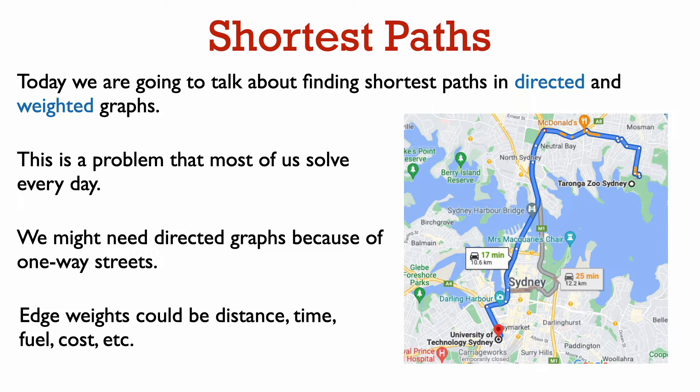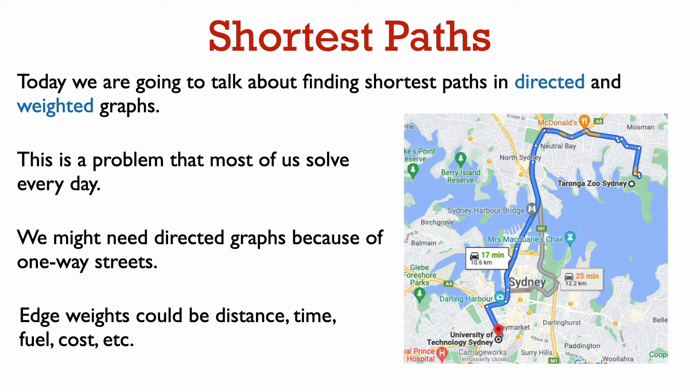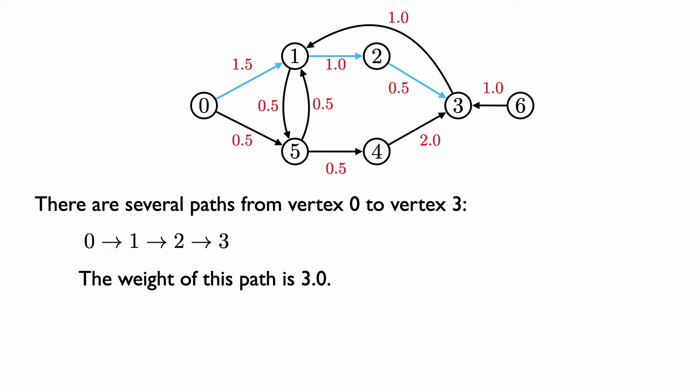This is the setting that we're going to study today: finding shortest paths in a directed and weighted graph. Let's first look at an example. Say that we want to go from vertex 0 to vertex 3. There are several different paths we can take. We can go from vertex 0 to vertex 1 to vertex 2 to vertex 3. The length of this path is the sum of the edge weights on the edges in the path, so the length of this path is 1.5 plus 1 plus 0.5, which is 3.